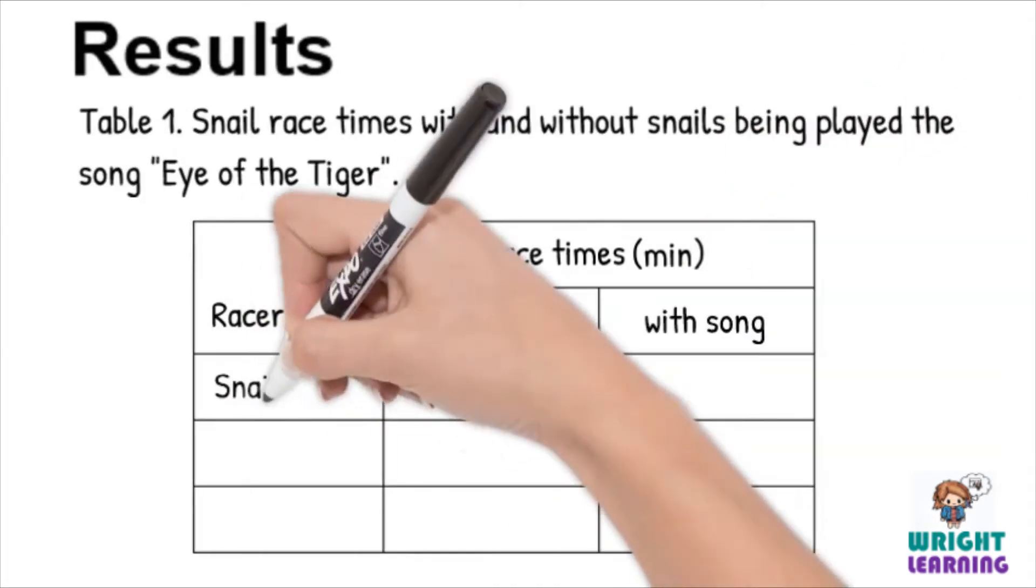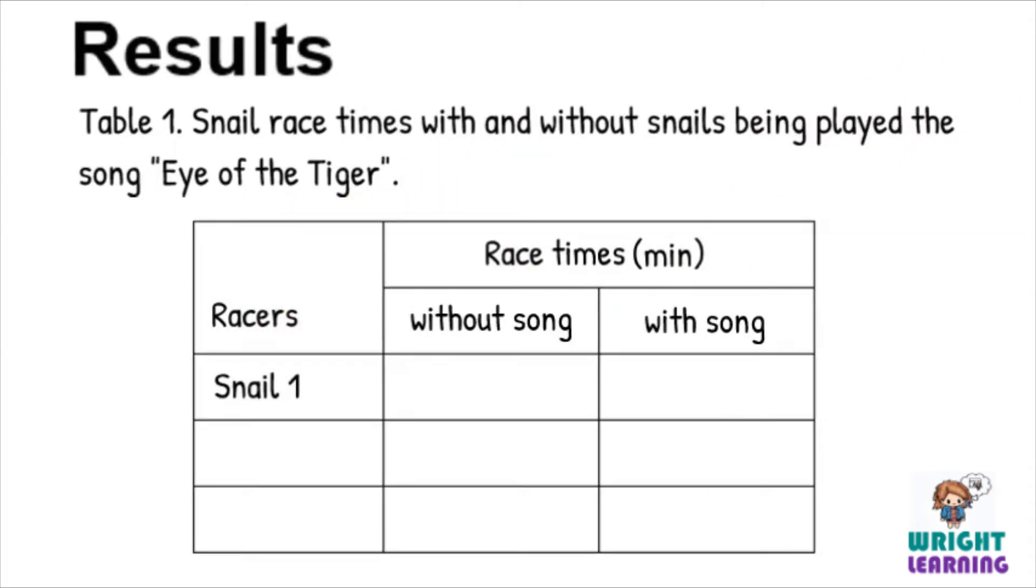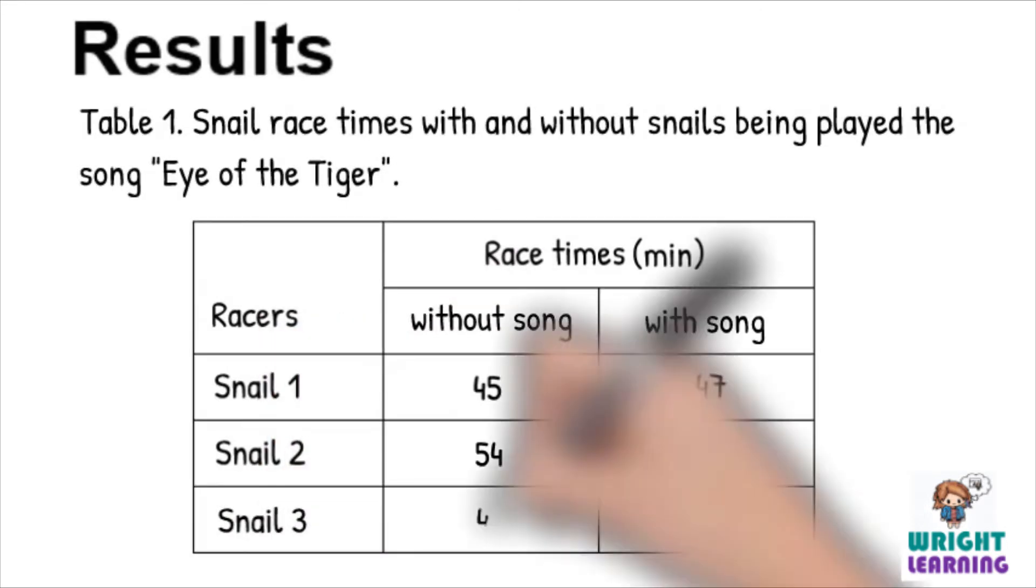Let's just say the first snail completed the racetrack in 45 minutes when the song wasn't played, and then 47 minutes when the song was played. The second snail took 54 minutes without the song, and 51 minutes when the song was played. And our third snail took 49 minutes both times.